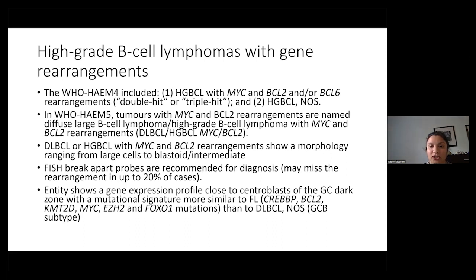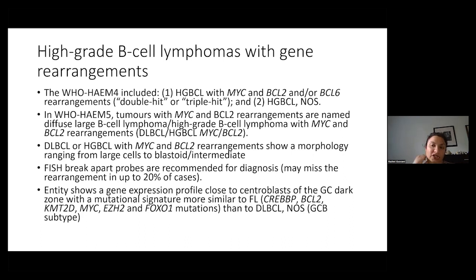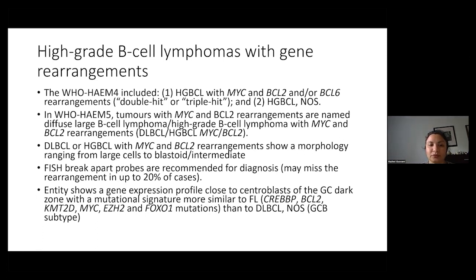In terms of high-grade B-cell lymphomas with gene rearrangements: the fourth edition had high-grade B-cell lymphoma with MYC and BCL2 and/or BCL6, as well as high-grade B-cell lymphoma NOS. Now that's been changed. Tumors with MYC and BCL2 rearrangements are now named either diffuse large B-cell lymphoma with MYC and BCL2, or high-grade B-cell lymphoma with MYC and BCL2. The WHO stated they still value the morphology for these entities, as there may be slight survival differences based on morphologic findings. Fish break-apart probes are recommended for diagnosis, although the WHO stated that break-aparts might miss rearrangements in up to 20% of cases.